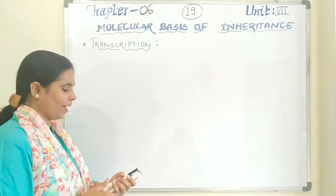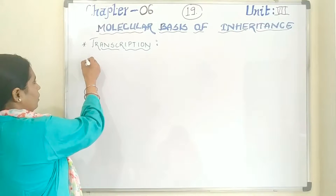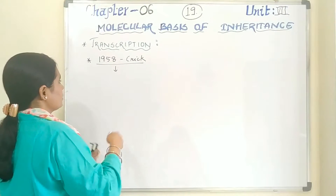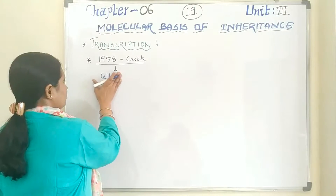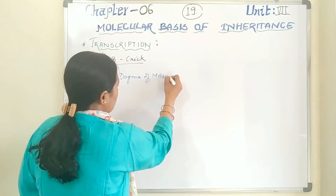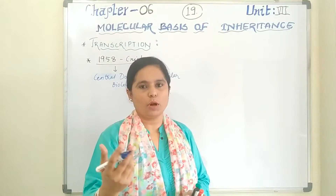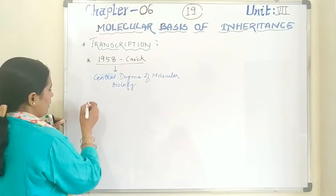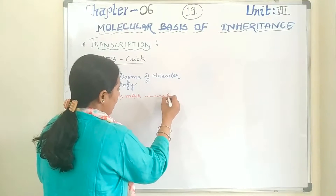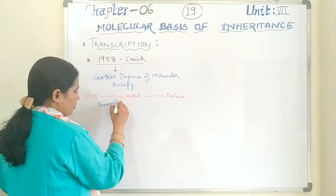Before I come to this topic, I want to recap a small topic I have already taught you. In 1958, scientist Francis Crick gave the Central Dogma of Molecular Biology. According to him, DNA first converts itself into mRNA form.